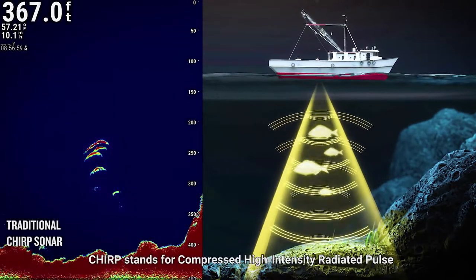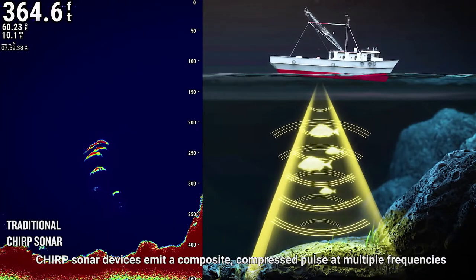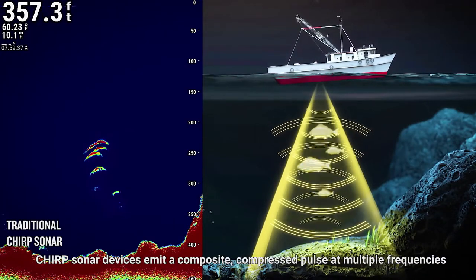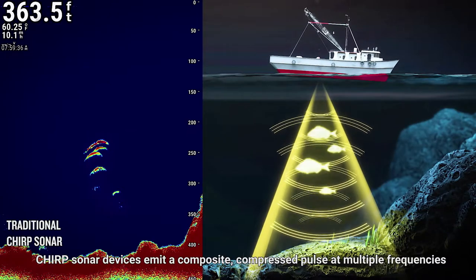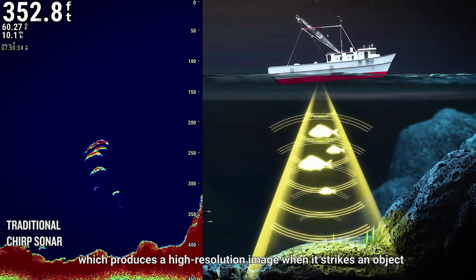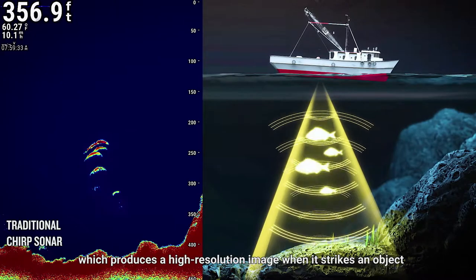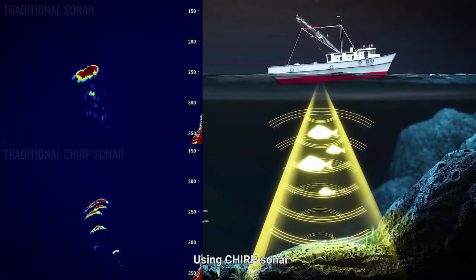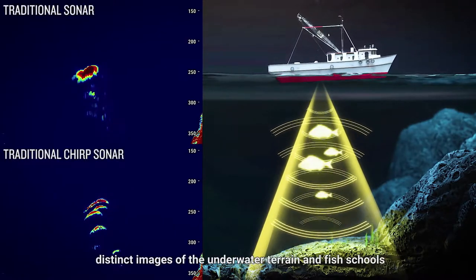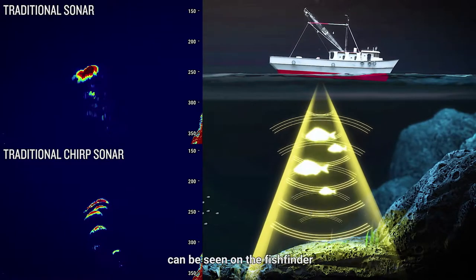Chirp stands for compressed high-intensity radiated pulse. Chirp sonar devices emit a composite compressed pulse at multiple frequencies, which produces a high-resolution image when it strikes an object. Using Chirp sonar, distinct images of the underwater terrain and fish schools can be seen on the fish finder.